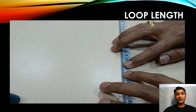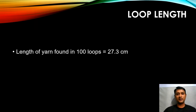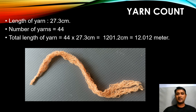We need to repeat this exercise a minimum of 10 times and take the average as the average loop length of the fabric. So our loop length result: the yarn found in 100 loops is 27.3 cm.